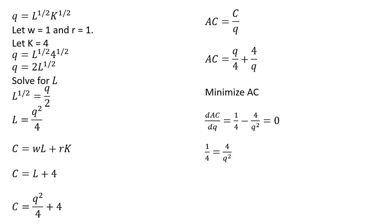So solving this equation then for Q. Moving some things around, multiplying through by Q squared, multiplying through by 4, and then taking the square root of 16. Q equals 4.